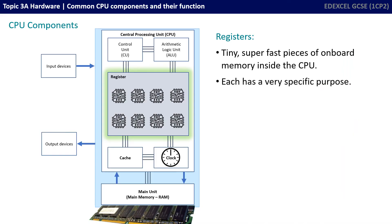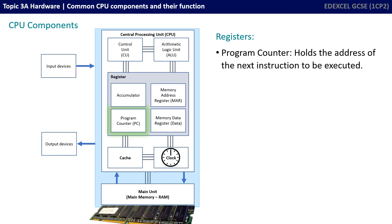The CPU contains a number of registers which are superfast pieces of onboard memory, each with a very specific purpose. While you're not required to know any of the different registers or their names at GCSE level, there are a few which are handy to know about. Four registers in particular will help give you a slightly better understanding of how the CPU actually works. The first is the program counter — this register holds the address of the next instruction to be executed, so no matter what the CPU is currently doing, it can always look inside the program counter to discover where in memory the next instruction is located.